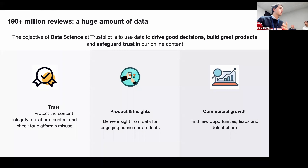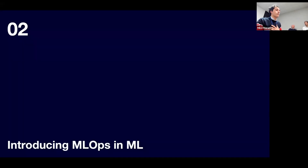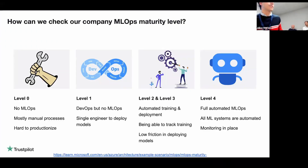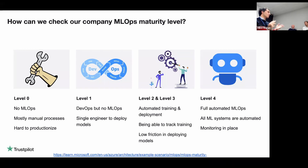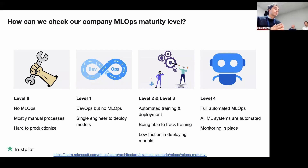Given this ML framework, how did everything start? Three years ago there wasn't a real ML engineering team at Trustpilot — people were developing models but it was very hard to get to production. When we formed the team, we looked at resources online, and the most important one for me comes from Microsoft. They list five levels of MLOps maturity, which are very useful to help your company understand what path to take and how to become more MLOps compliant.